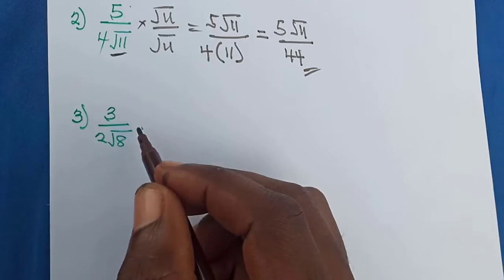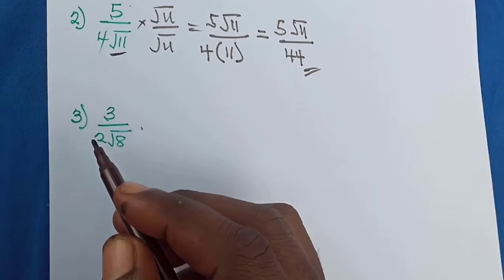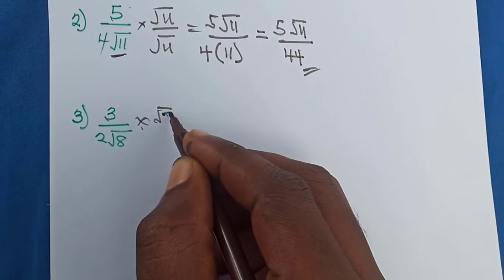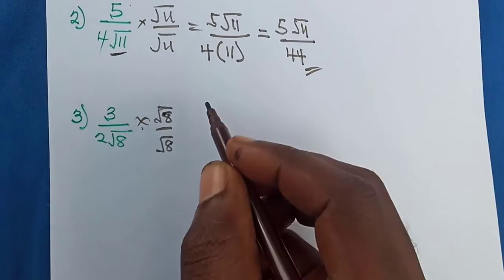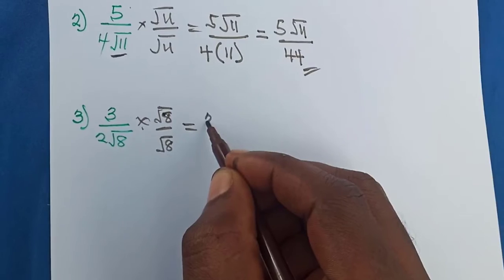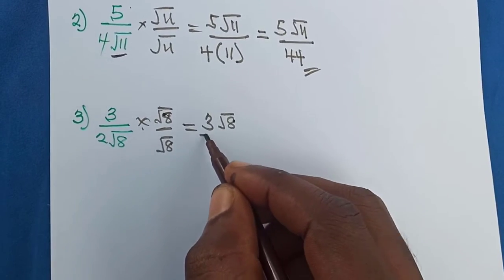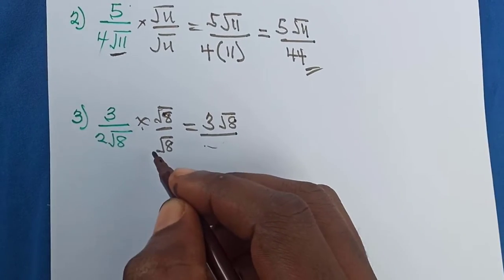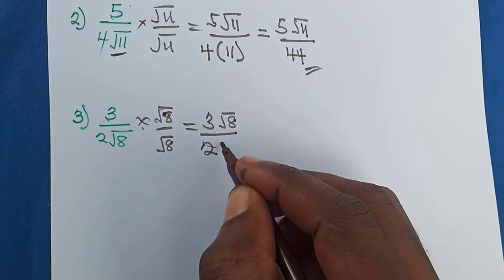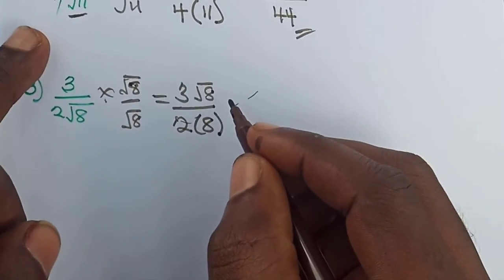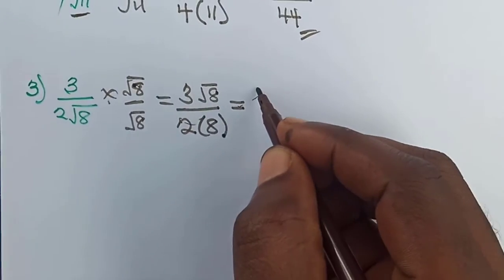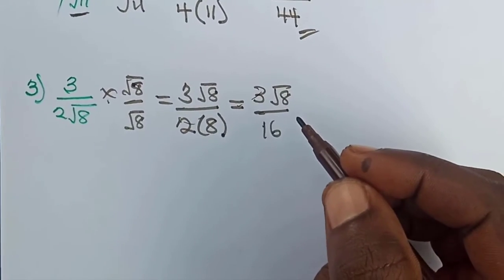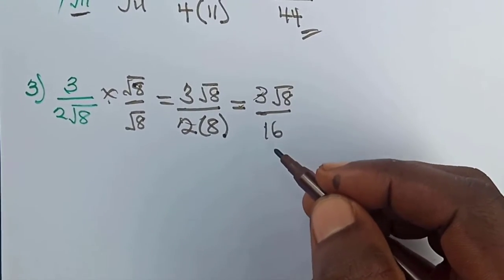Now let's look at the last example: 3 over 2 root 8. We need to make the denominator rational, so we multiply both the numerator and denominator by root 8. This gives us 3 times root 8 in the numerator, which is 3 root 8. In the denominator, there is a hidden 1, so 2 times 1 is 2, and root 8 times root 8 is 8. So 2 times 8 gives us 16, meaning we have 3 root 8 over 16. We have made the denominator a rational number.